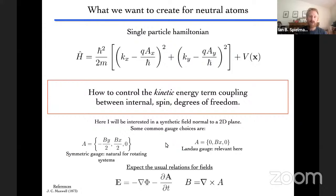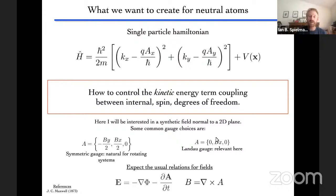Our task as Hamiltonian engineers is to engineer a single-particle Hamiltonian with vector potential components Ax and Ay that depend on space such that their curl is non-zero. In this talk, we'll engineer the Landau gauge in which the vector potential has only a Y component that depends on X, so the curl is non-zero. The fields we create will look like authentic fields: their time derivative gives an effective electric field, and their spatial curl gives a magnetic field.